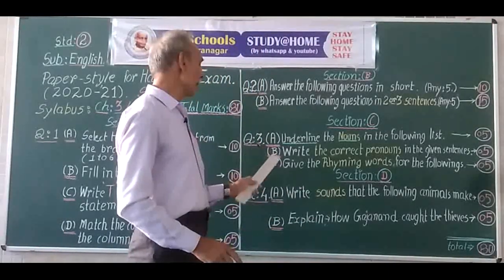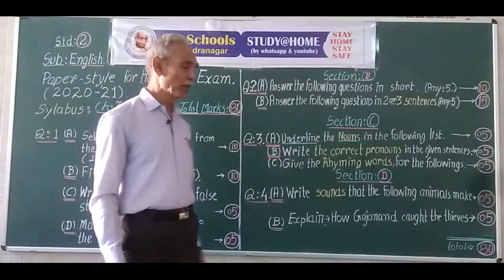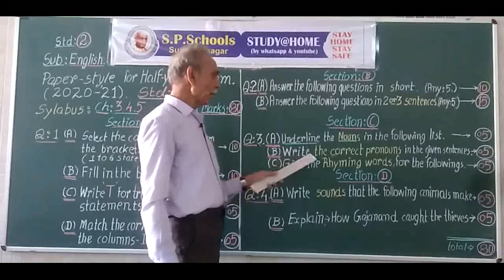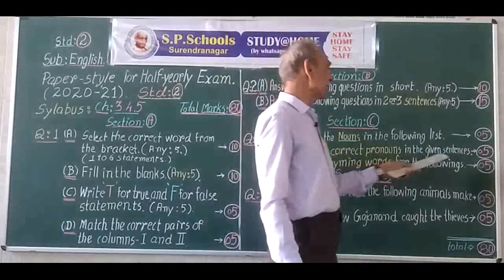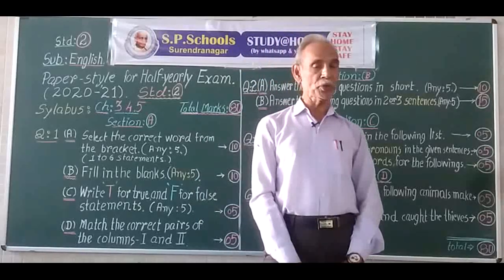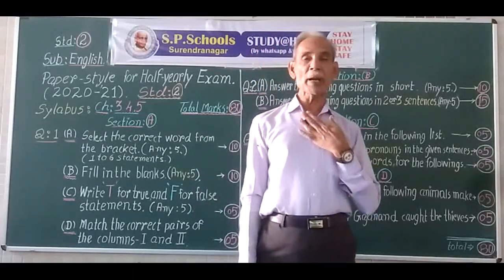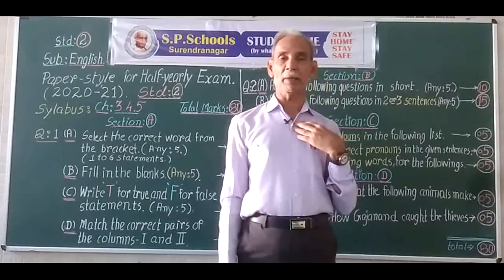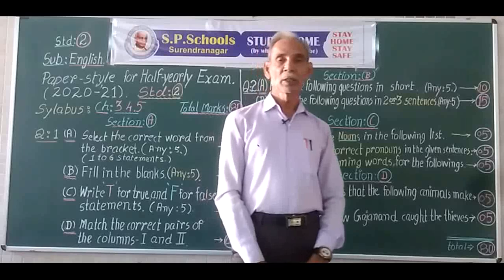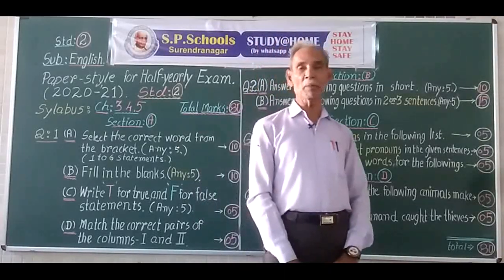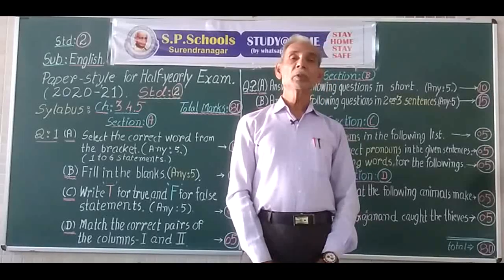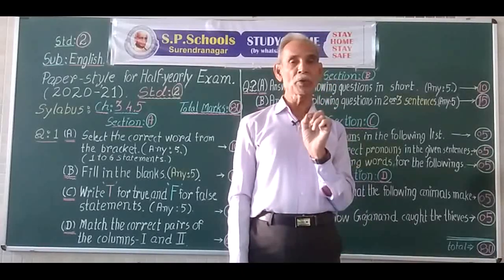Question 3B is to write the correct pronouns in the given sentences. Pronouns are words that are used in place of nouns. For example, if my name is whatever it may be, I can use 'I' for myself and 'we' for ourselves. The words used in place of nouns are called pronouns. You have to write correct pronouns in the given sentences.